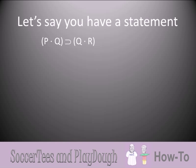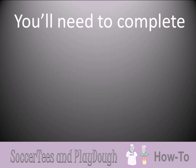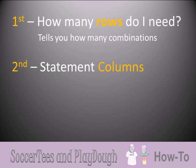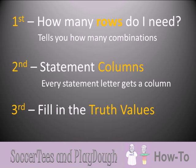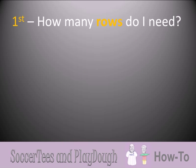So let's say you have a statement like this one: 'If B and Q then Q and R,' and you need to make a truth table. You'll need to write out all the possible combinations of truth values for the simple statements. To do that, you need to complete three tasks: first, figure out how many rows the table will need; second, create statement columns where every statement letter gets its own column; and third, fill in the truth values for those columns.